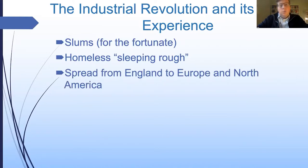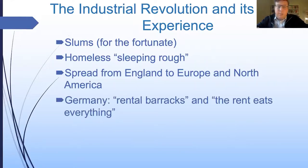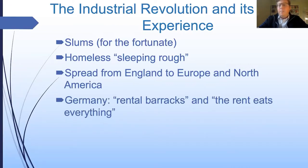Once people saw how this system could work in England, the possibility of making money this way spread to continental Europe — especially France, Germany, Belgium, and Holland — and then to North America. In Germany it was especially intense, because Germany is one of the other places with large coal deposits and abundant water. Germany has a valley in its western part called the Ruhr, which has the biggest coal deposits in Europe. People were crammed into tightly packed slum apartments called 'rental barracks' because it was like living in the army, and the common saying among German workers was 'the rent eats everything' — 60 to 70% of people's income went to paying rent.